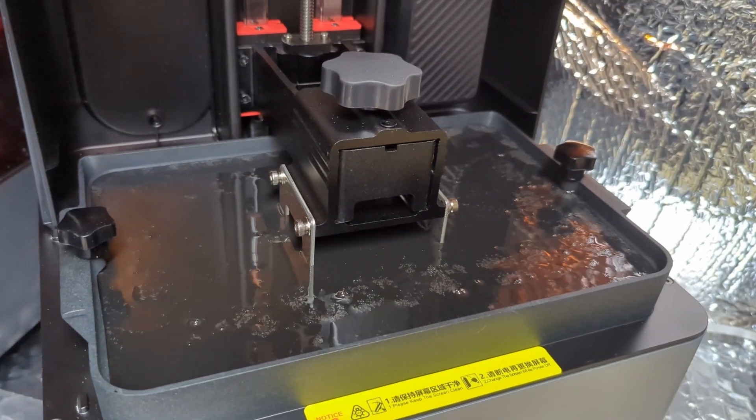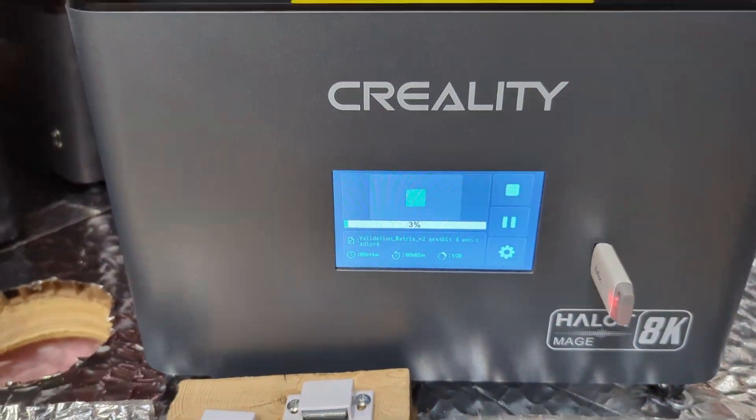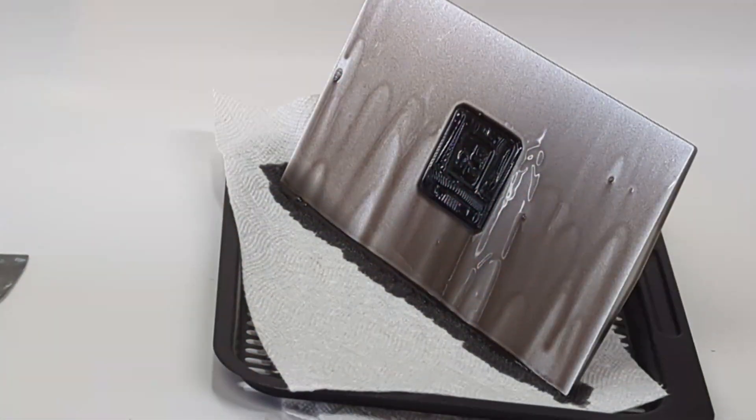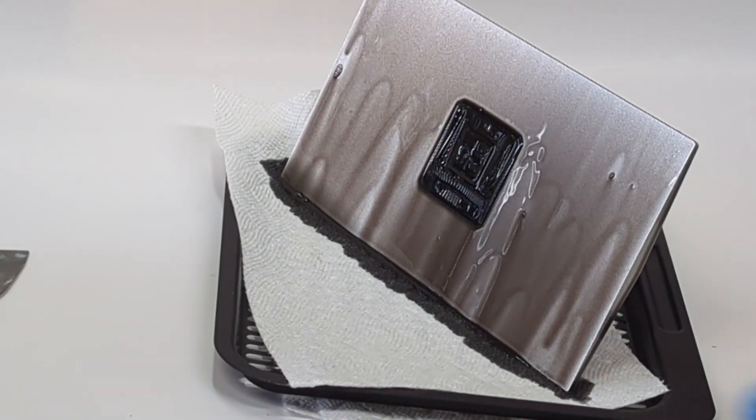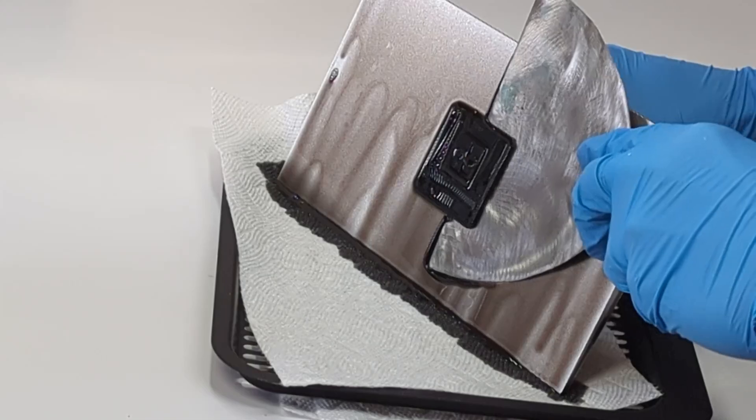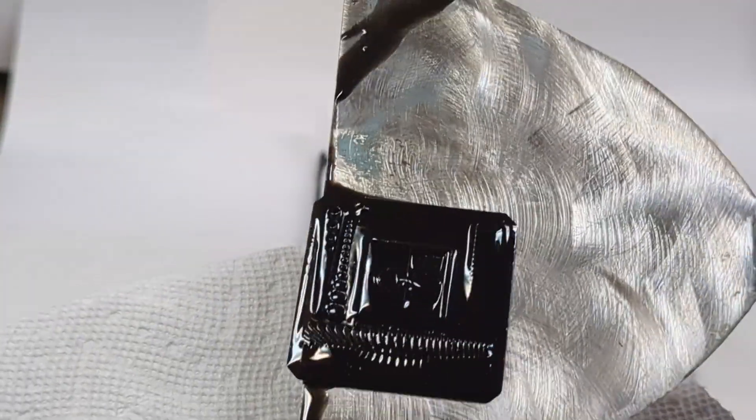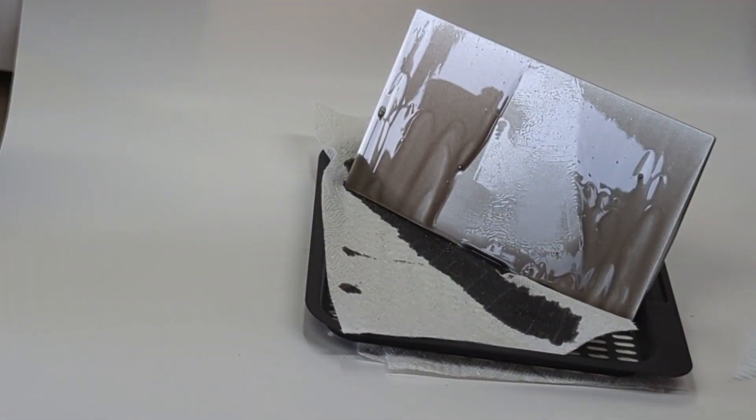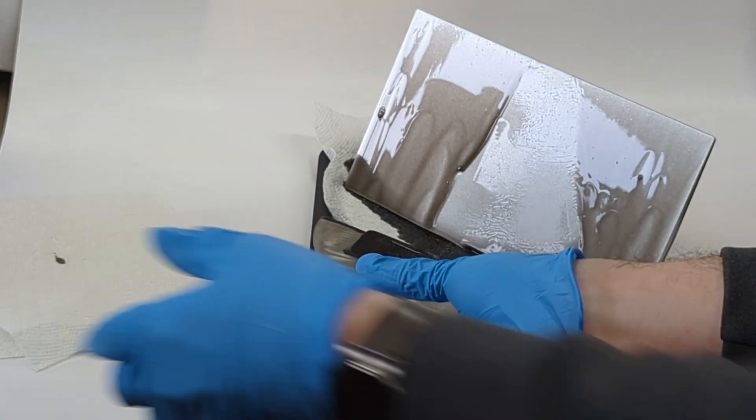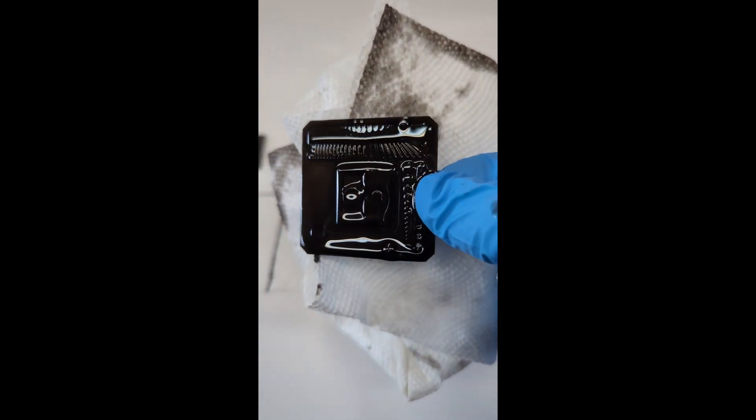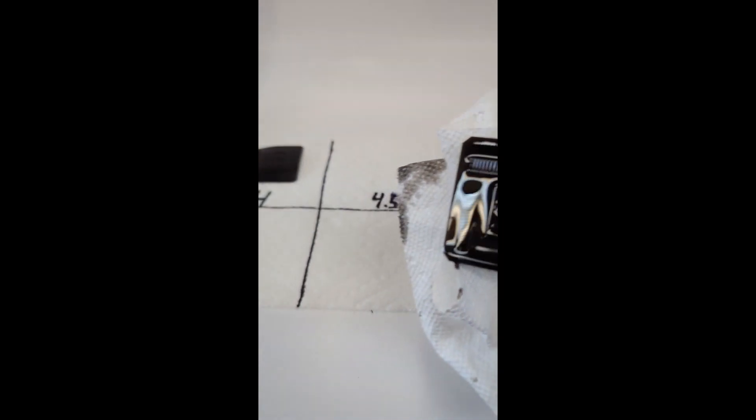During the first exposure test, I used the settings as the technical datasheet provided, 25 seconds for the base layer and 4 seconds for the normal exposure. I immediately noticed that the adhesion to the build plate was very weak. Even after leaving the print dripping for a few hours, I noticed that there was still a good amount of resin on the print. With resin with such a high viscosity, there's gonna be more resin that's gonna be wasted during the post-treatment.